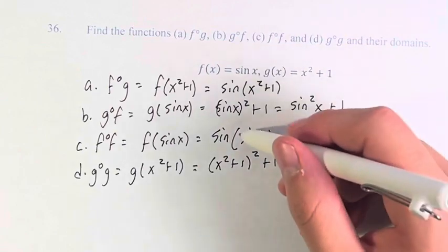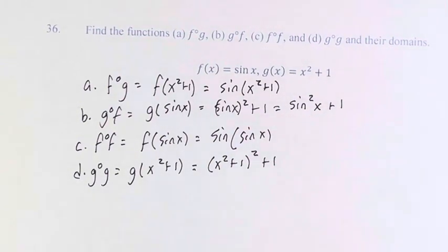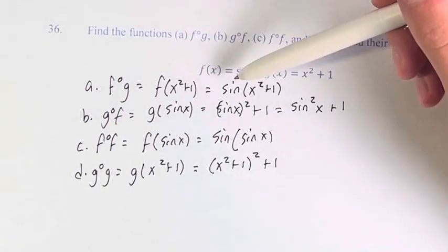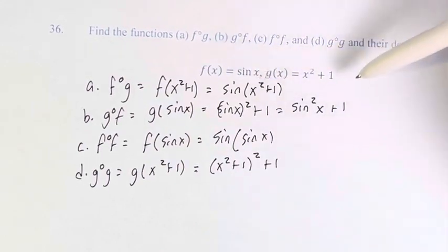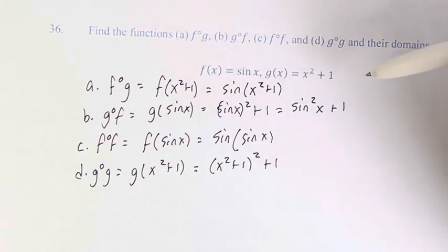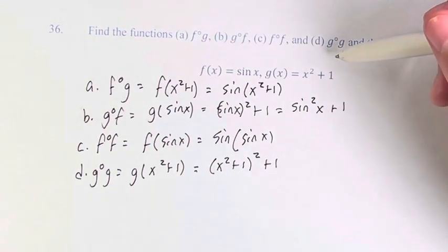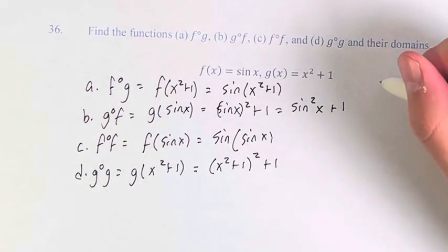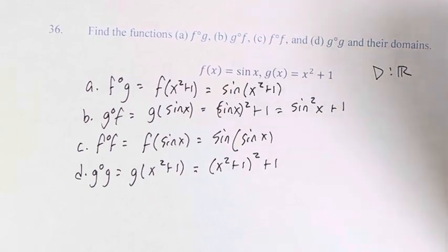So these are our four functions, a, b, c, and d. And just briefly, by looking at the domains of f and g, we can see that the domain of this is all real numbers, and the domain of this is all real numbers. So the domain of their compositions, all of these, the domain is also all real numbers for all of them.